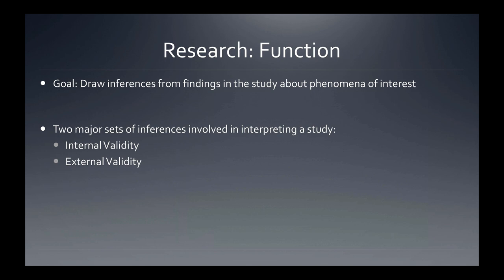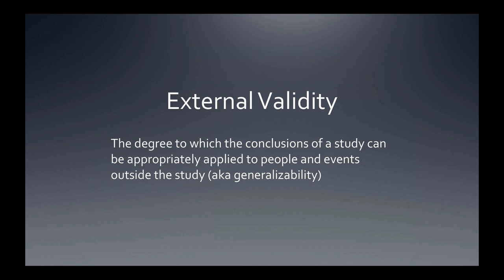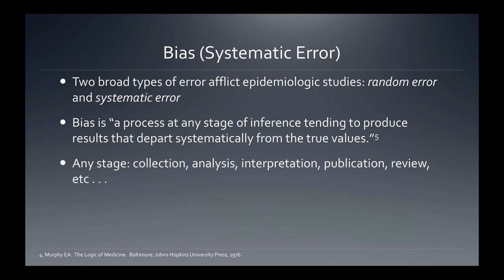Ultimately, the goal is to draw inferences from findings in our study about the phenomenon of interest. There are two major sets of inference involved in interpreting a study: internal validity — the degree to which the investigator draws correct conclusions about what actually happened — and external validity, or generalizability — the degree to which we can apply conclusions to students in situations outside the study. Our goal is to minimize bias, defined as any process that yields results systematically differing from the truth.